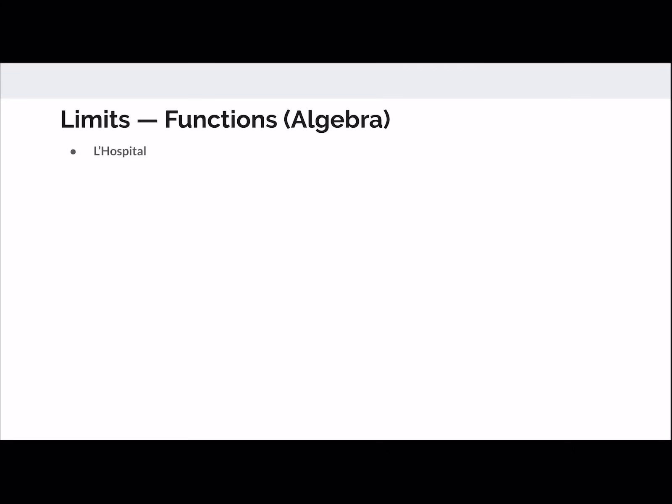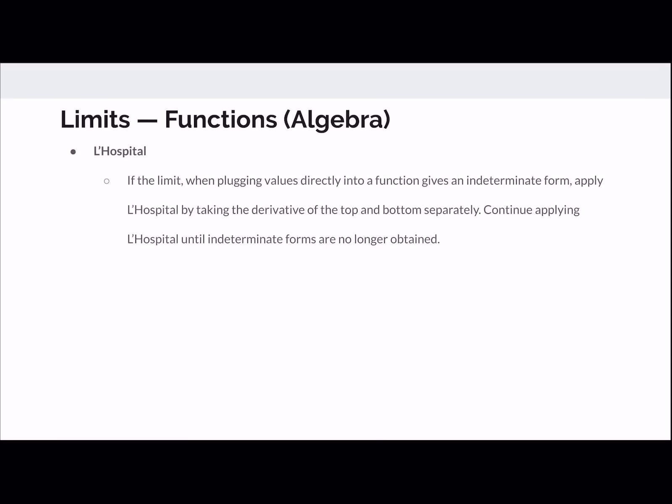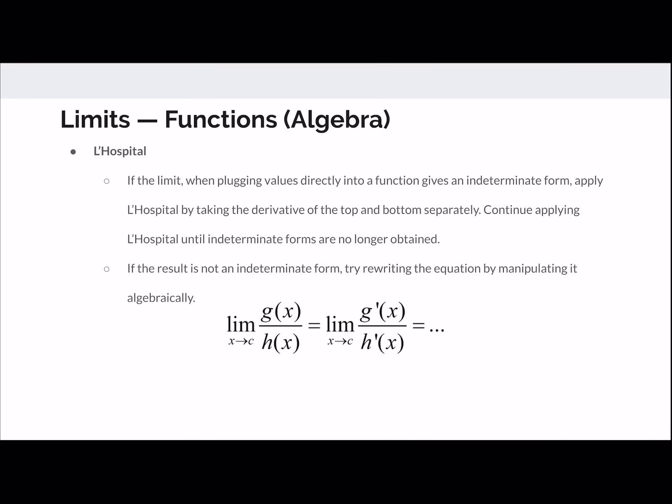When taking limits, you'll often want to apply L'Hôpital's Rule. If you see 0 over 0 or infinity over infinity — indeterminate forms — you take the derivative of the numerator and denominator separately (not the quotient rule) and then plug in the value you're approaching. If you get another indeterminate form, keep applying L'Hôpital. If you can't apply it, you need to rewrite using algebraic manipulation.